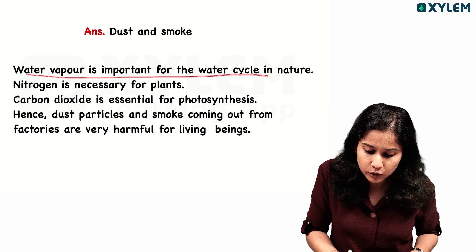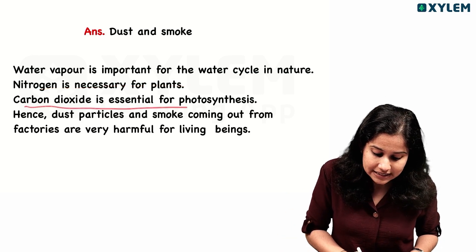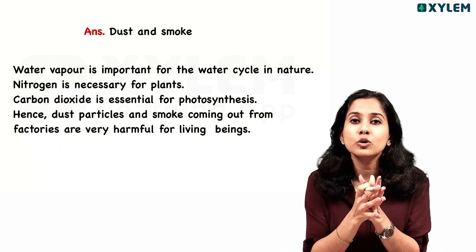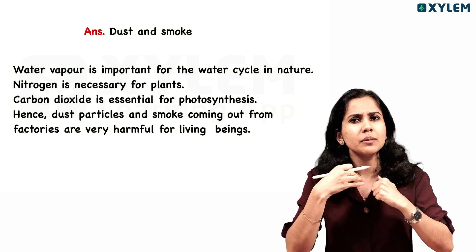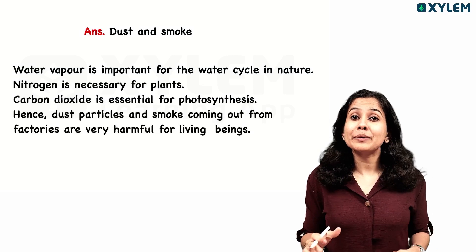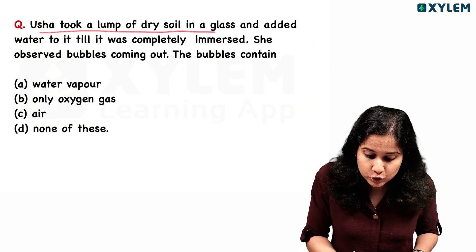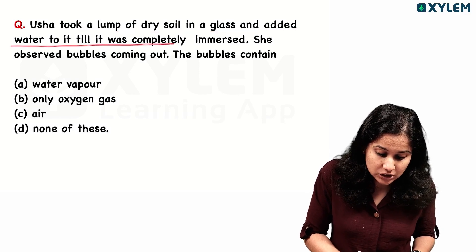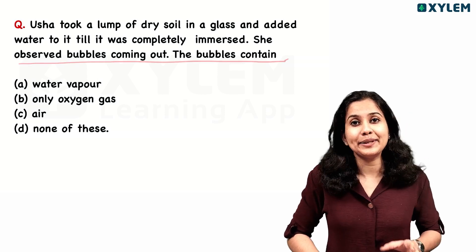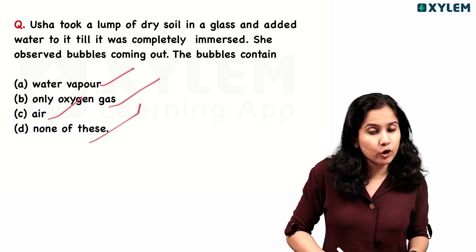Water vapor is important for the water cycle in nature. Nitrogen is necessary for plants. Carbon dioxide is essential for photosynthesis. Now, looking at the next question about bubbles — the bubbles are coming out. The bubbles contain: Water vapor, only oxygen gas, air, or none of these.